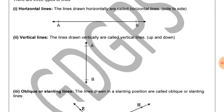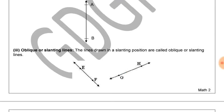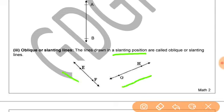Vertical lines are the lines that are drawn vertically, that is up and down. Oblique or slanting lines are the lines that are drawn in a slanting position, such as GH is a slanting line and EF is also a slanting line.